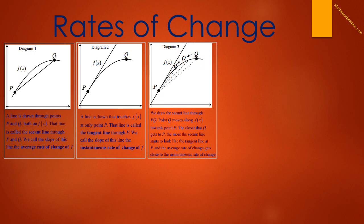Calculus is the study of change. So let's let the value of Q change. Q will now move along the curve f of x closer to P. As Q gets closer to P, the secant line changes. The closer Q gets to P, the more the secant line starts to look like the tangent line at P. And so the average rate of change gets close to the instantaneous rate of change at P.